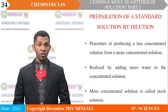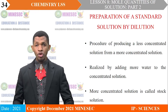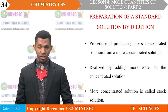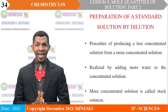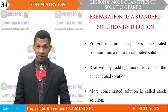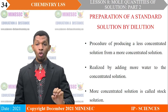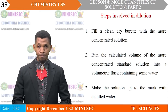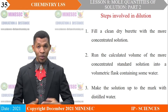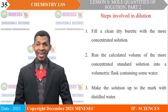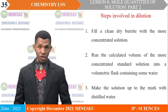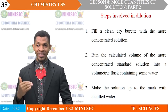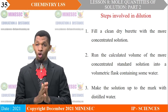Preparation of a standard solution by dilution: dilution is a procedure of producing a less concentrated solution from a more concentrated solution by adding more water. The more concentrated solution is called the stock solution. Steps involved in dilution: fill a clean dry burette with the more concentrated solution, then run the calculated volume of the concentrated standard solution into a volumetric flask containing some water.